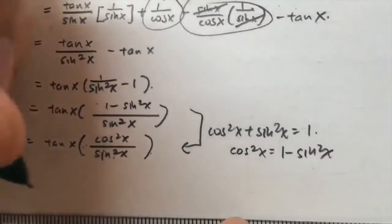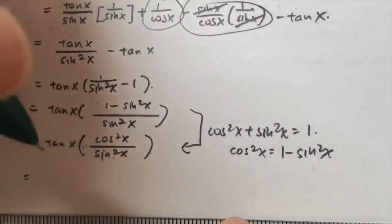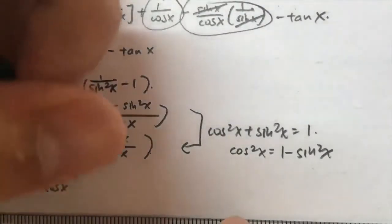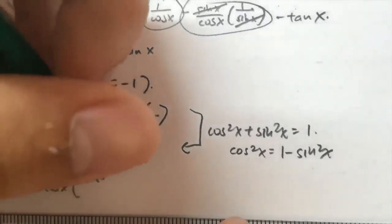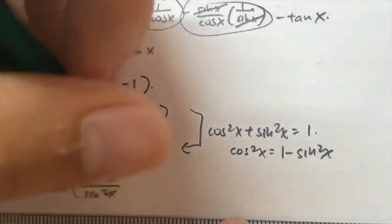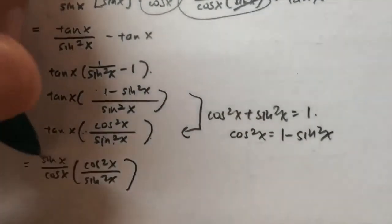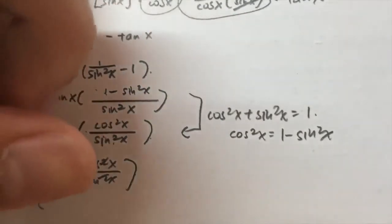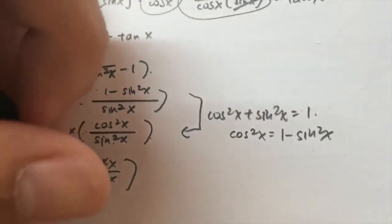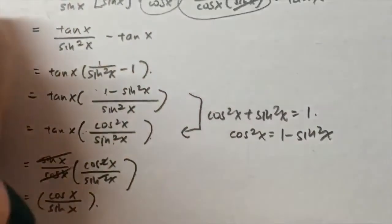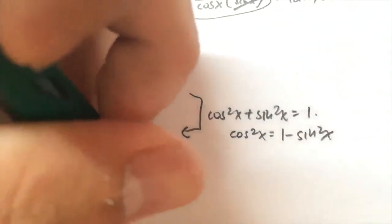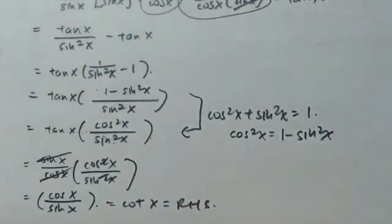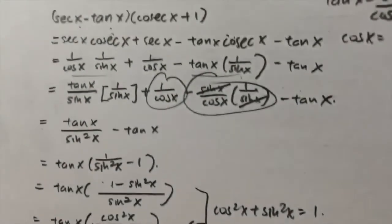Next, I convert tan x into sin x over cos x, and the rest remains the same. After which I can simply cancel off. So this is equivalent to cos x over sin x. And cos x over sin x gives you cot x, which is equivalent to the right-hand side. So that is it for this question.